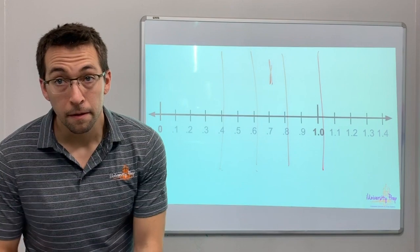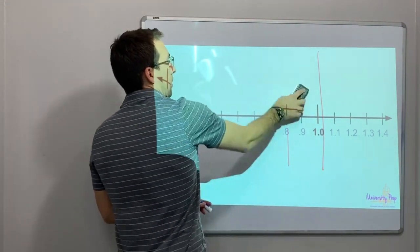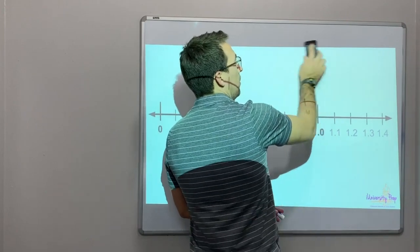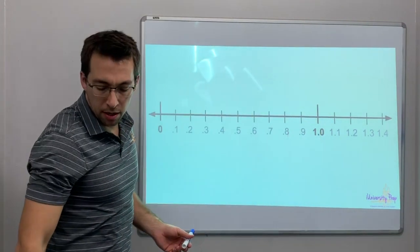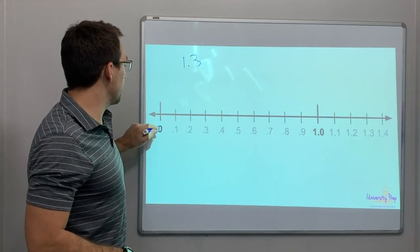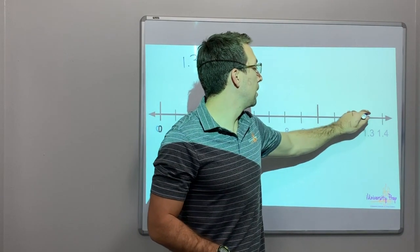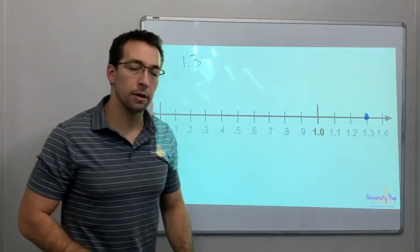Now, if we have a number line, where would we be 1.3? Let's say we're looking for 1.3. So we start at 0. We go to 1, 1.1, 1.2, 1.3. 1.3 on the number line is right there.